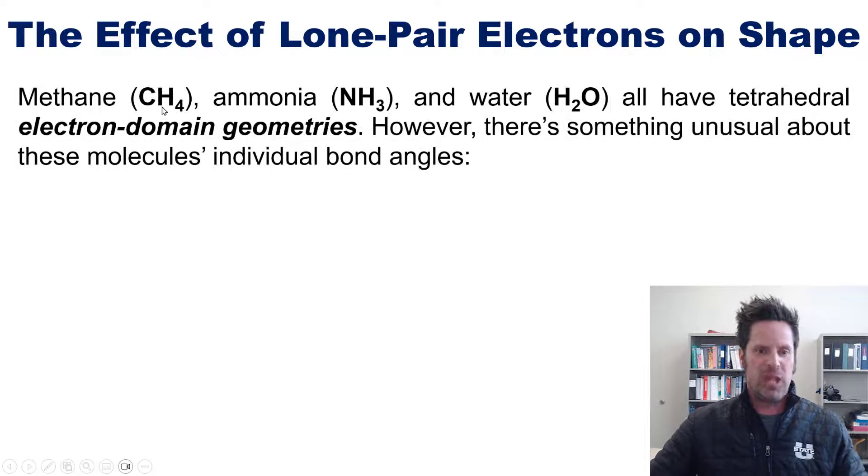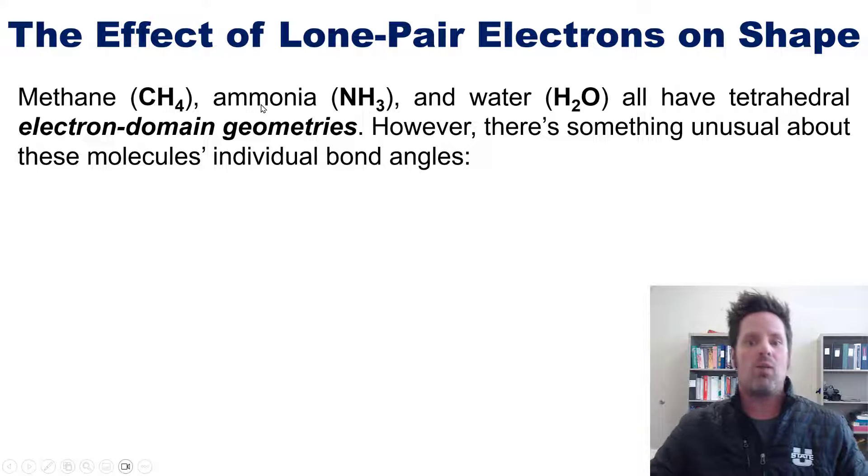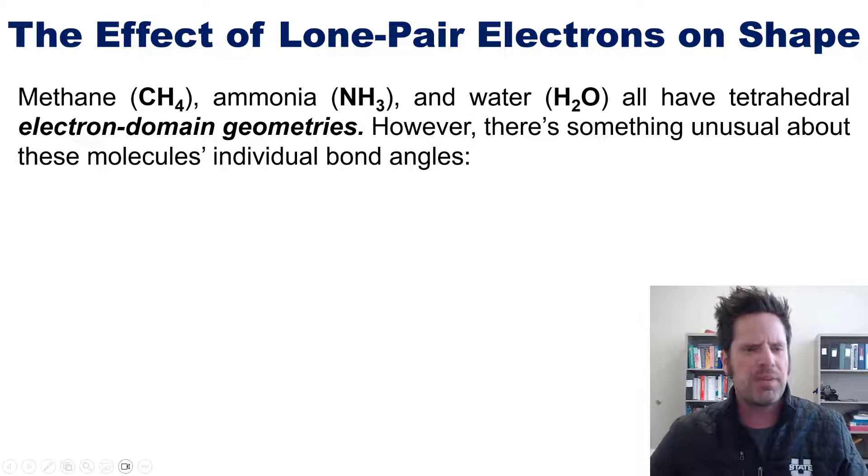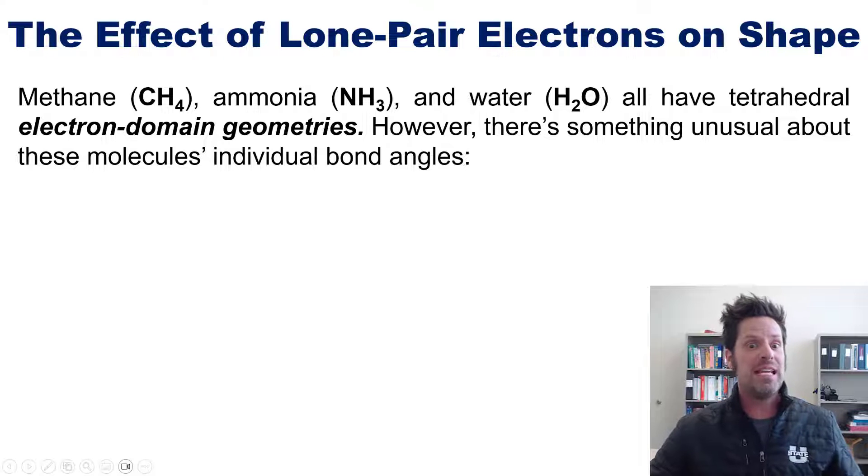So as it turns out, methane CH4, ammonia NH3, and water H2O all have tetrahedral electron domain geometries. However, there's something unusual about these molecules' individual bond angles.